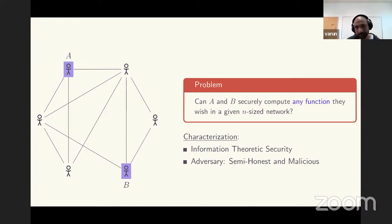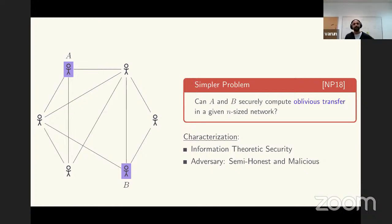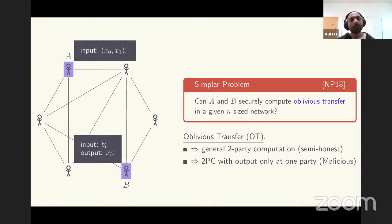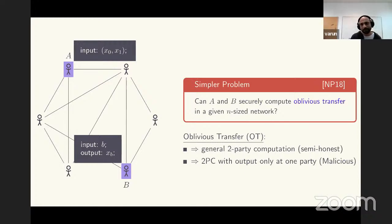It suffices to look at whether A and B can securely compute a specific functionality called oblivious transfer (OT). In OT between A and B: A has a pair of bits x0, x1 as input; B has a single bit b as input; B gets output x_b while A receives no output. OT is complete for secure two-party computation — in the semi-honest setting, if A and B can securely realize OT, they can compute any two-party function securely.